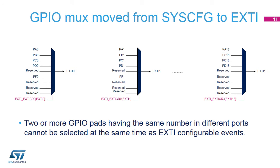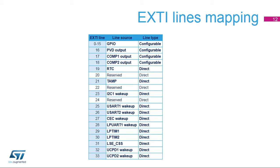The STM32G0 has 5 I/O ports. Ports A to D are 16 pins wide, and Port F is 4 pins wide. Each of the 16 EXTI configurable events related to GPIO ports has an independent multiplexer. The EXTI multiplexer outputs are available as output signals from the EXTI block to trigger other IPs, independently from any masks defined in the EXTI-IMR and EXTI-EMR registers. This table provides all inputs of the EXTI block and indicates for each whether it is a configurable event input or a direct event input.